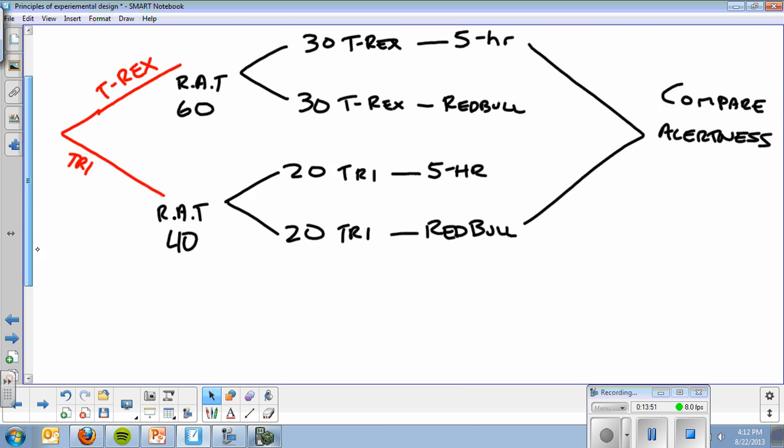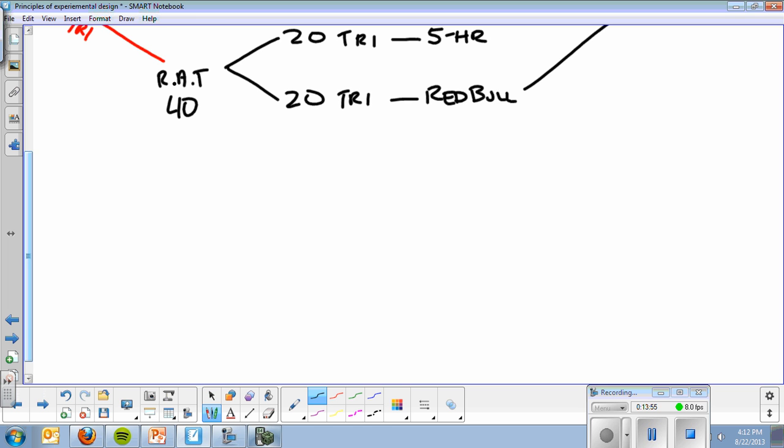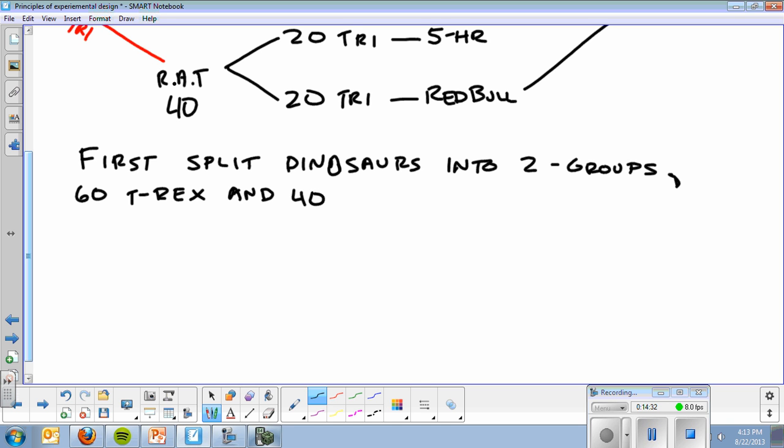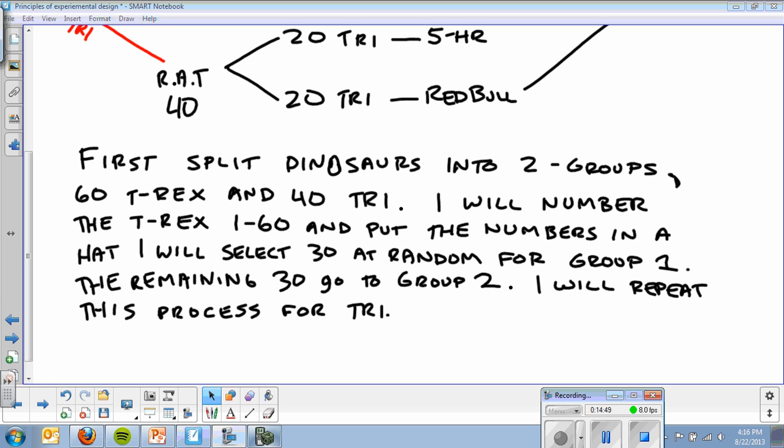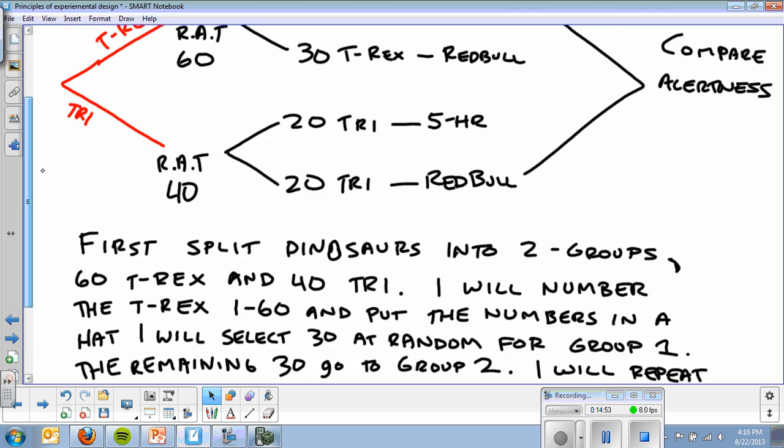The last thing I have to do is how am I randomly assigning them. First, split dinosaurs into two groups: 60 T-Rex and 40 Triceratops. I wrote the rest of that out because I'm running out of time on the video. Repeat the process for the triceratops, and because I've got the numbers up here, then I'm all set.